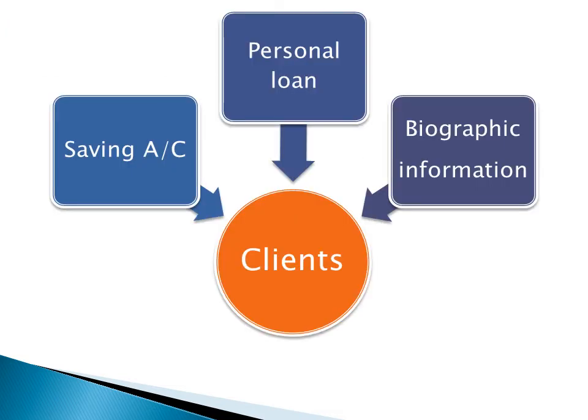Database is also called a computerized system whose purpose is to maintain information and to make that information available at any time. We can also take an example from the bank, which may have separate files for its clients. These files may be about his saving account, personal loan, or his biographic information. The client's database would include records from each of these files, and in this way we can get any type of information about any client very quickly and very easily.